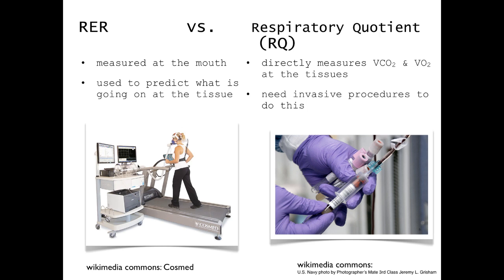We measure RER with a pretty simple piece of machinery — a bit expensive, but very simple to operate and not invasive whatsoever. You'd use a typical metabolic cart. RER is great for predicting RQ when things are at steady state, such as during very submaximal exercise or at rest under normal conditions. We get into challenges when there's hyperventilation of some sort, meaning past the ventilatory threshold during an exercise test, or potentially at rest when someone is hyperventilating. For the most part, RER is a pretty good indication of respiratory quotient, and it's much less invasive.